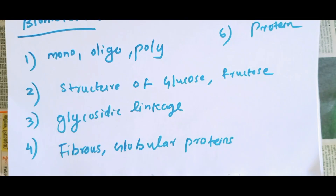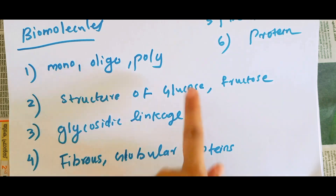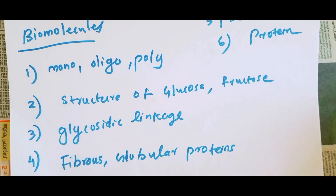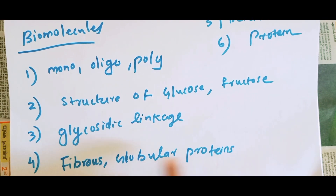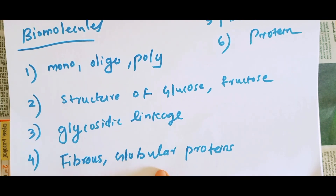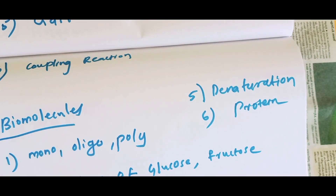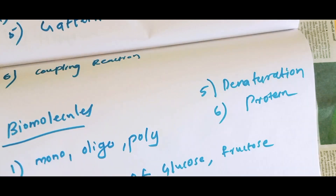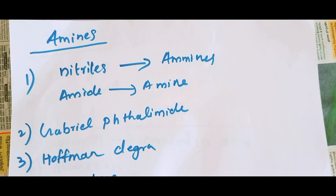Biomolecules theory chapter: monosaccharides, oligosaccharides, polysaccharides, structure of glucose, glycosidic linkage. Fibrous and globular proteins, denaturation, protein classification — primary and secondary proteins.